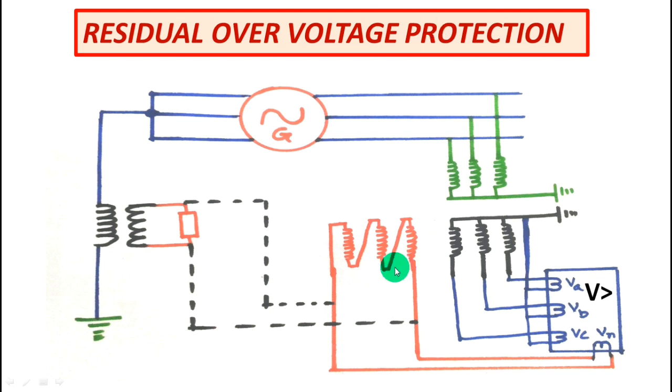Now the next possibility is to use a broken delta. See this is a broken delta. Many people confuse it with open delta. But remember this is not open delta. This is called broken delta PT. Here you can see that the 3 phase voltages are getting sum up.